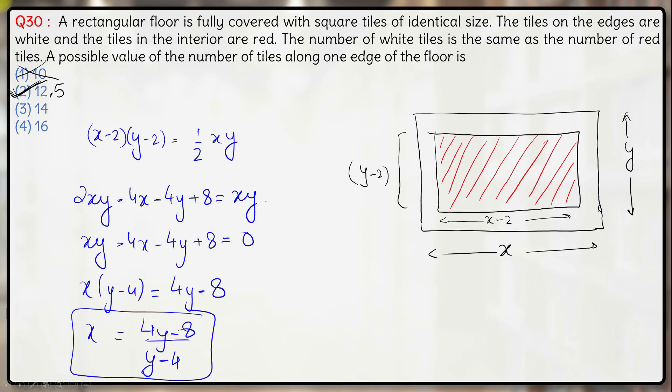If y is 14, 4 into 14 is 56, 56 minus 8 is 48 divided by 14 minus 4 is 10, again not an integer.